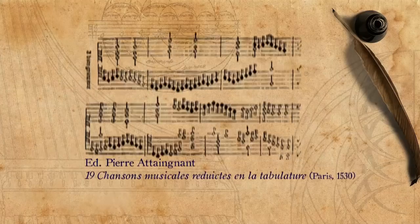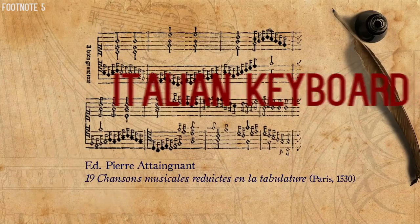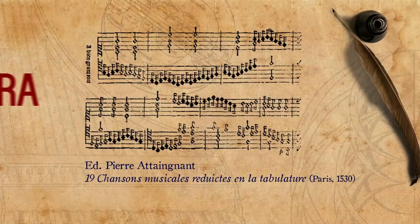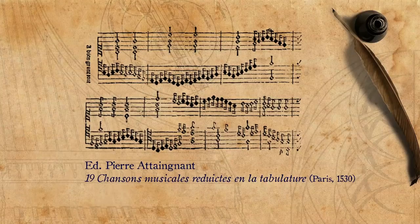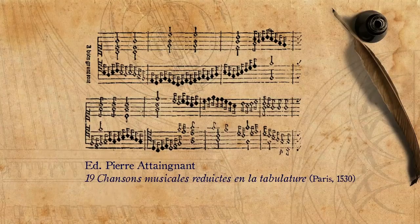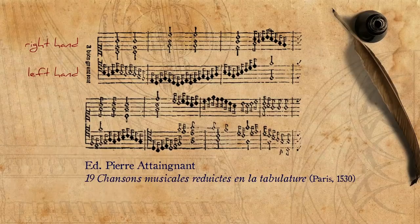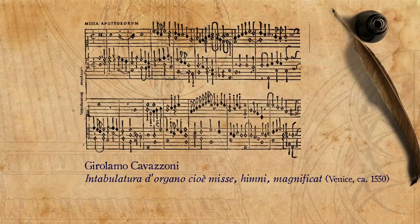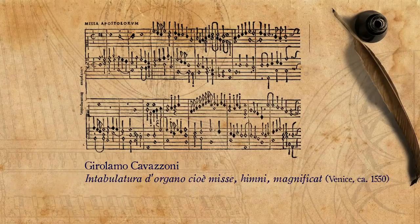Starting in the 1530s, we see prints in the so-called Italian keyboard intavolatura. This notation is basically mensural notation as we know it from choir books and part books, only set on two staves — one for the right hand and another for the left. In the different publications, we see a varying number of lines on each staff, from five as with normal vocal staves up to many more.